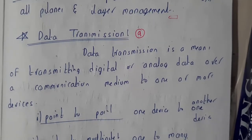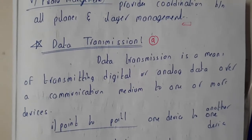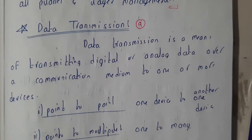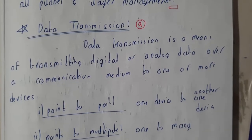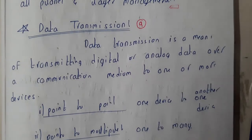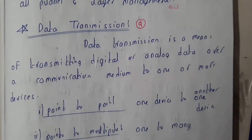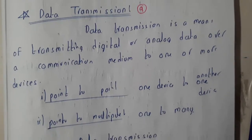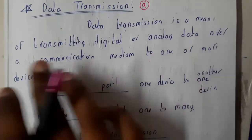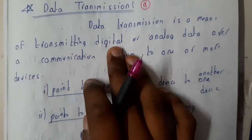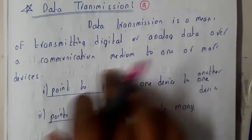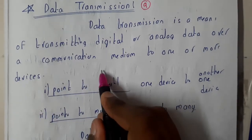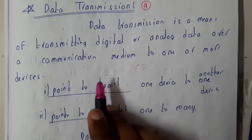Hello guys, we are back with our next tutorial. In this tutorial let us go through data transmission. Data transmission is a means of transmitting digital or analog data over a communication medium from one or more devices. Data transmission is nothing but transmitting a particular data from one to another, or one to many.